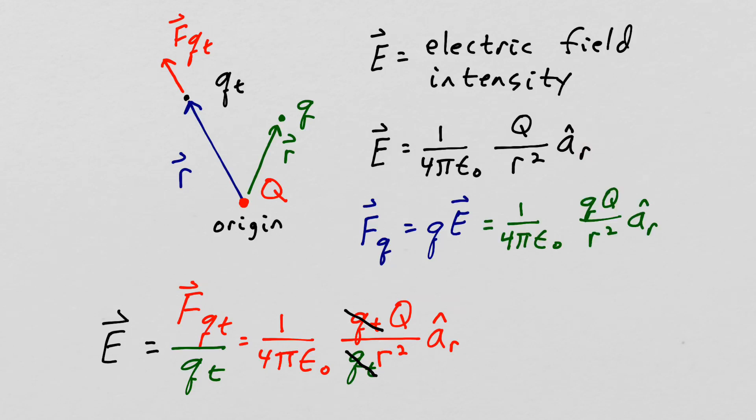So multiplying our electric field intensity by q just gives us back Coulomb's law for the force between two charges when one of the charges is at the origin.